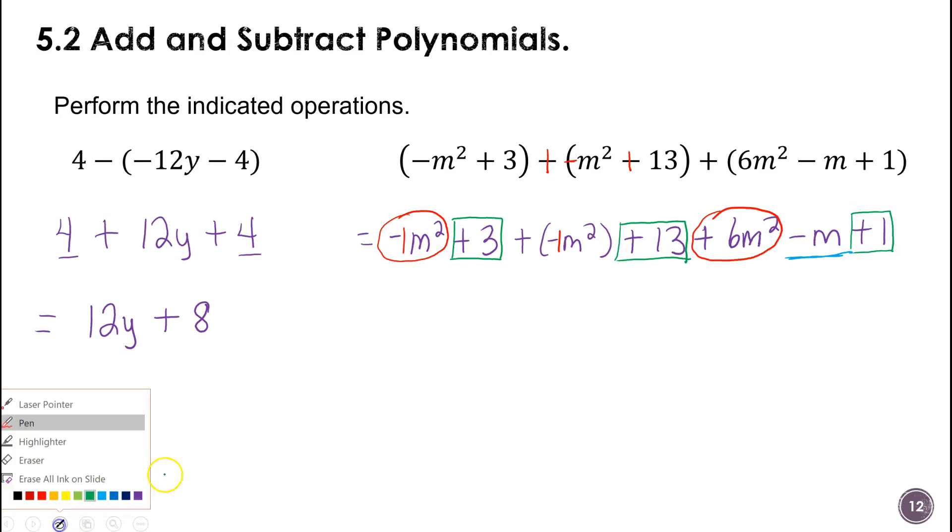Okay, so now let's put this all together. So I have negative 1 plus negative 1 is negative 2 plus 6. That leaves me with 4m². Then I have a 3, a 13, and let's do the negative m. So I have a negative 1m because we can't combine it with anything. There were no like terms for the m. And now we'll go to the numbers 3, 13, and 1. So that's 16, 17. And that's complete.